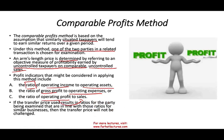If the transfer price results in ratios for the party being examined that are in line with those ratios for similar businesses, then the transfer price will not be challenged. They would look at your business, look at your profit based on one of these ratios, and if those ratios are comparable to other businesses, then your transfer price is considered acceptable.